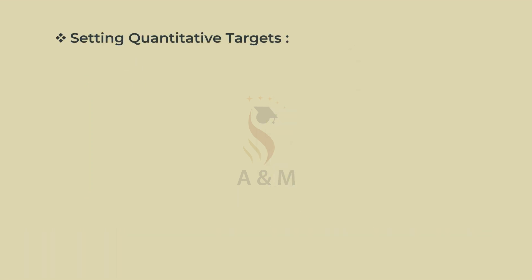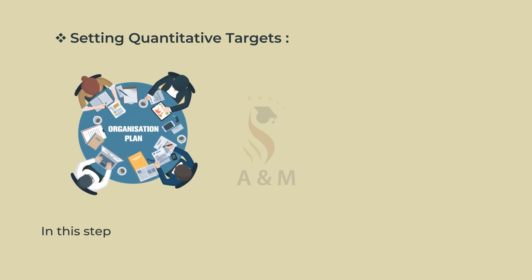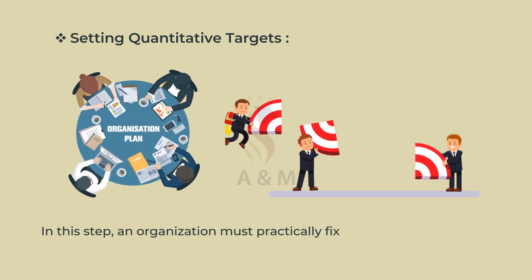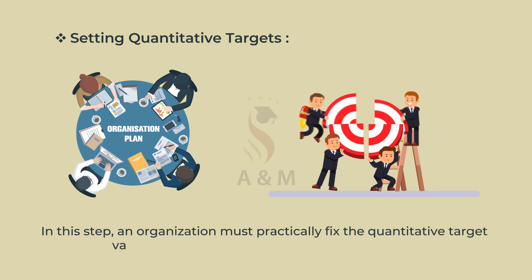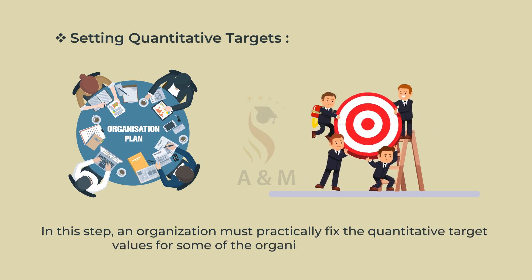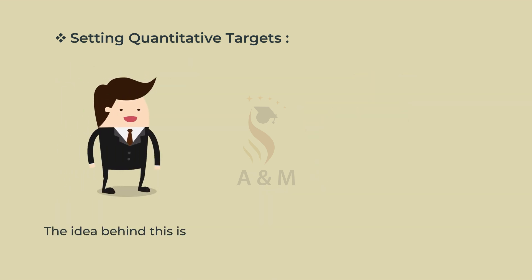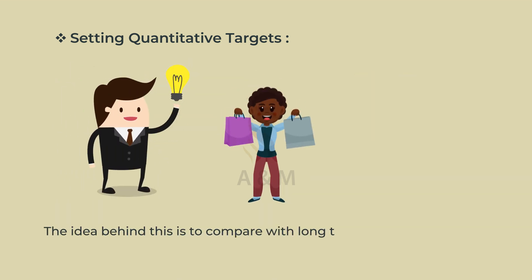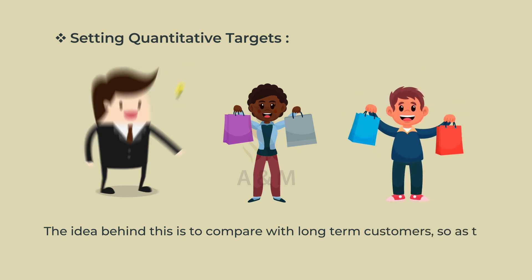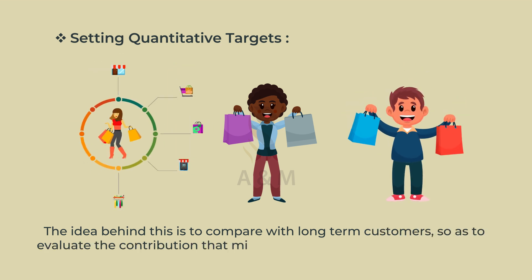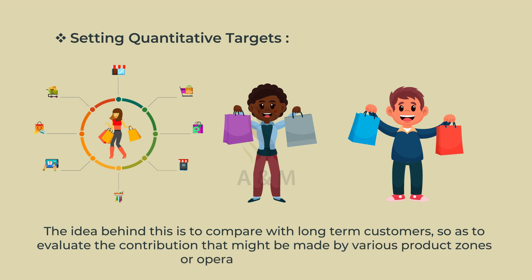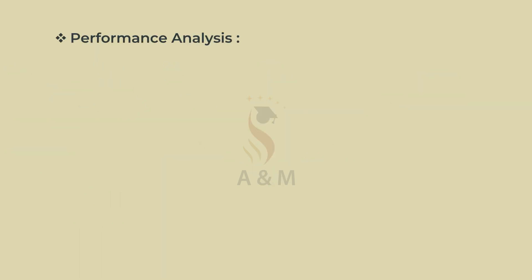Third step is setting quantitative targets. In this step, an organization must practically fix the quantitative target values for some of the organizational objectives. The idea behind this is to compare with long-term customers so as to evaluate the contribution that might be made by various product zones or operating departments.